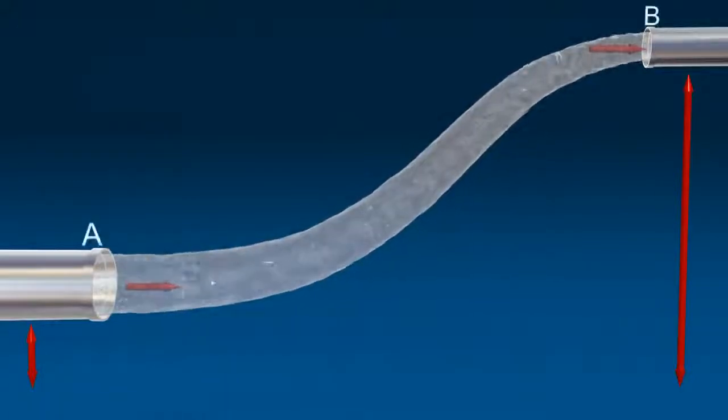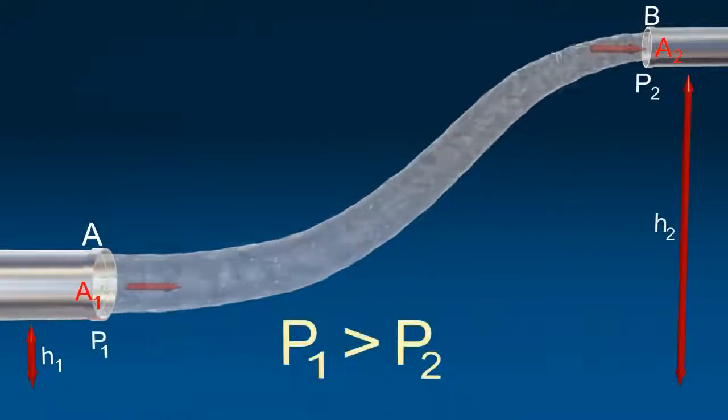Consider a tube AB of varying cross-section A1 and A2 and at different heights H1 and H2. Liquid is flowing from A to B.